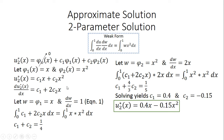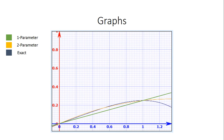Plugging c1 and c2 back in, our two-parameter solution is u2 star of x equals 0.4x minus 0.15x squared. Looking at the graph, the blue-gray line is the exact solution, the green line is the one-parameter solution — which is linear — and the yellow line is the two-parameter solution. As you add more parameters, the approximate solution increasingly takes the shape of the exact solution. I hope you learned about exact and approximate solutions — see you in the next video!